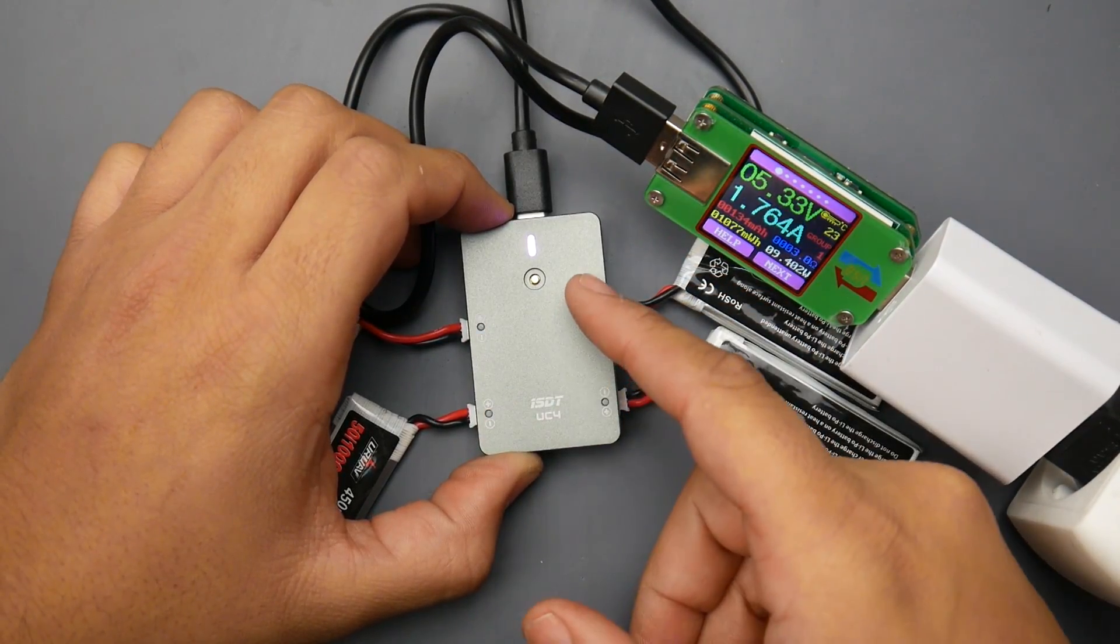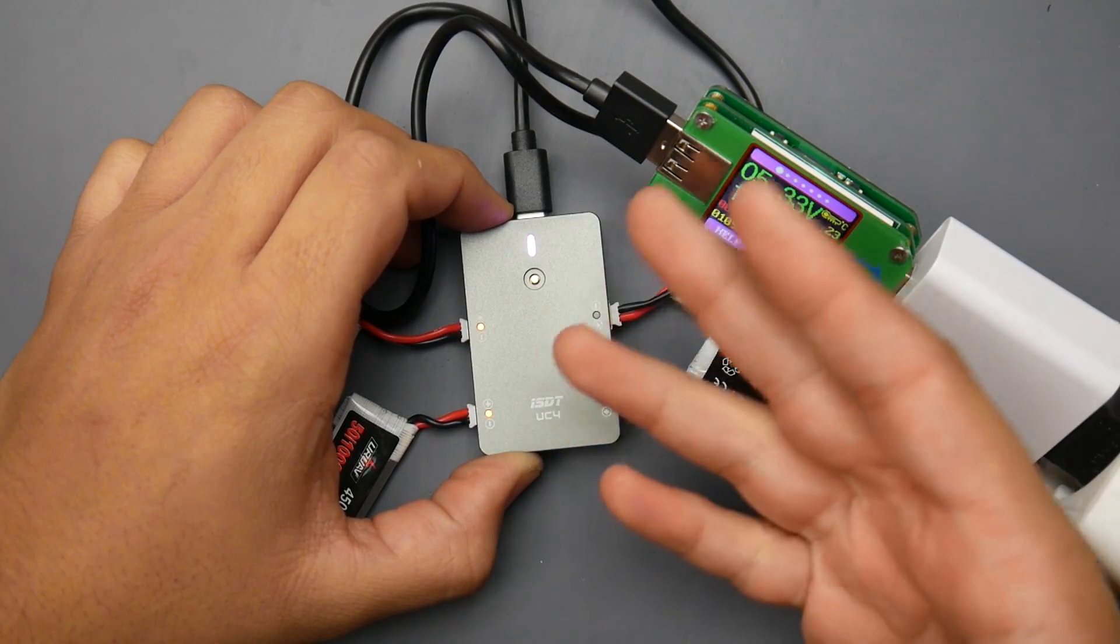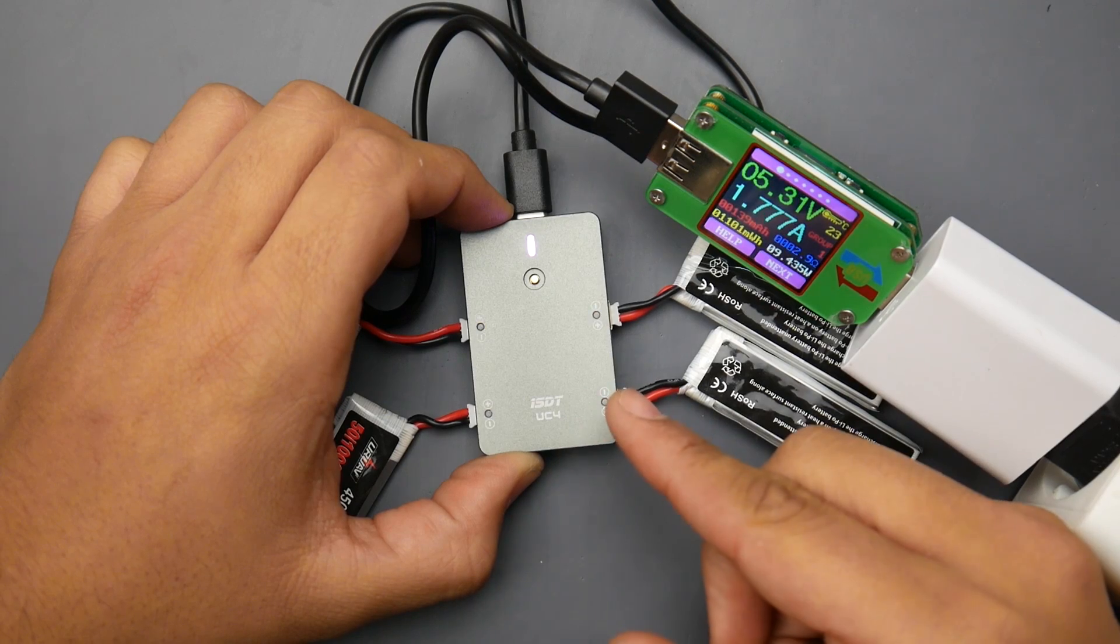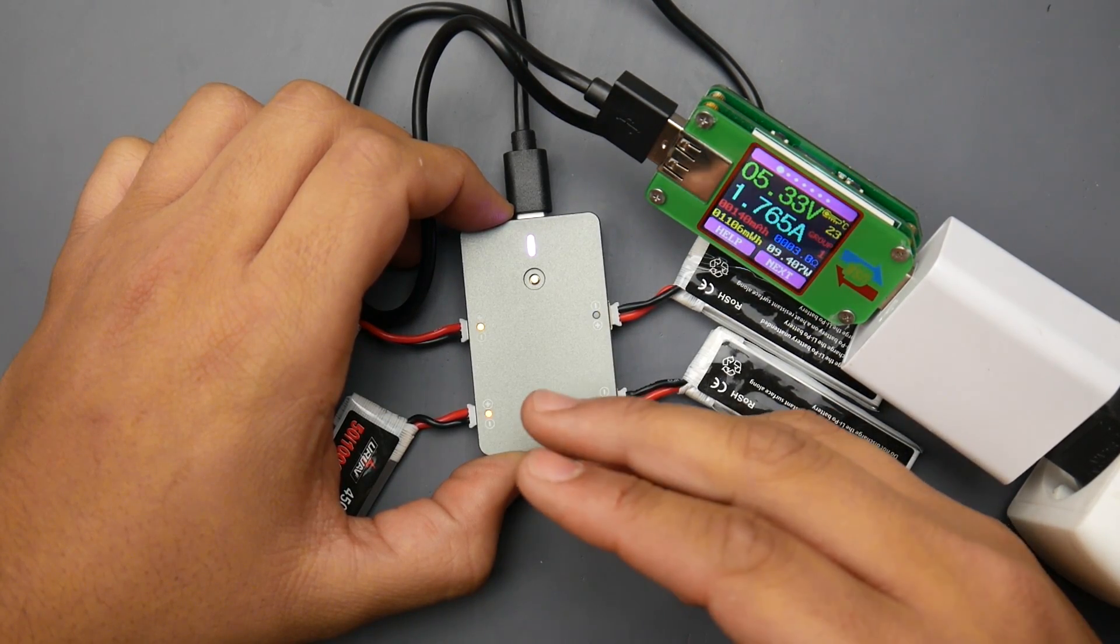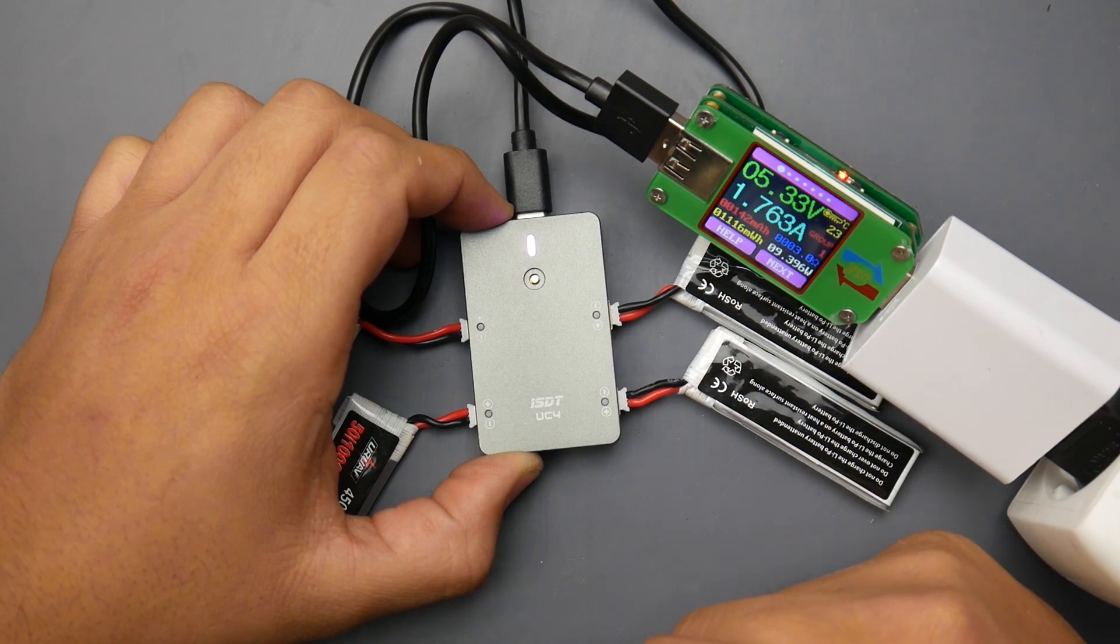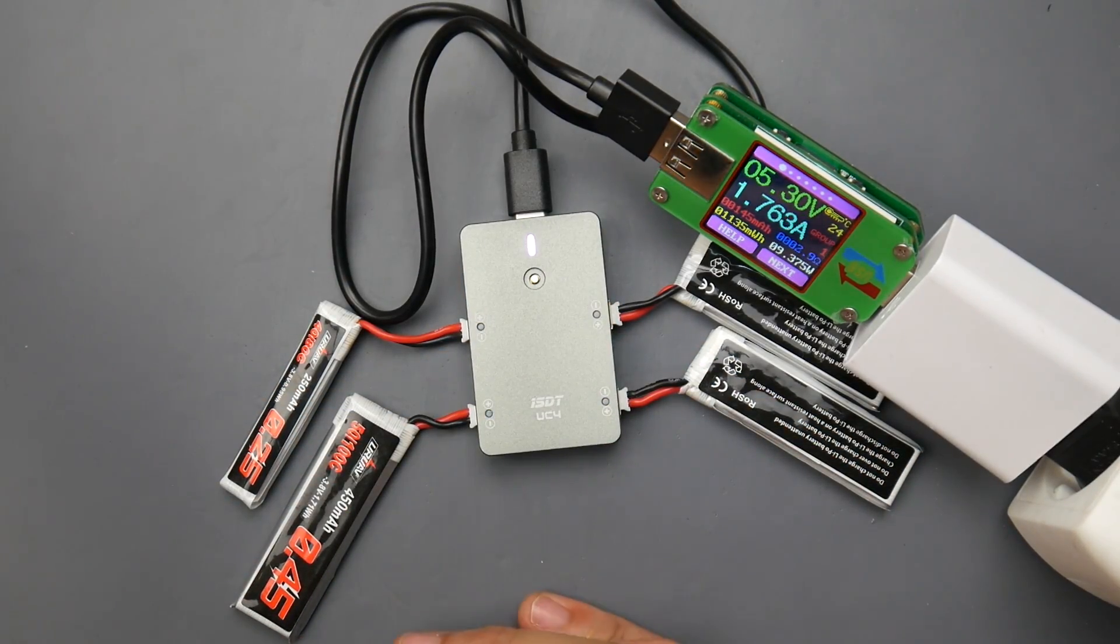Now if you take a look at each battery it has different blinking lights. So basically if we have it just blink once that means it's less than 40 percent, that battery is less than 40 percent. And if it's blinking twice it's anywhere between 40 and 70 percent. And if it's blinking three times it's anywhere between 70 and 99 percent. And when it's solid that means it's full basically.